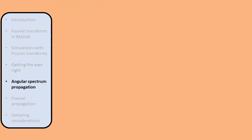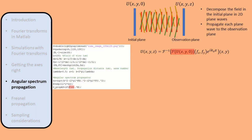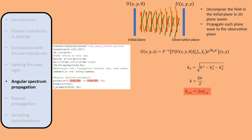Now that we know what the axes are when taking a Fourier transform in MATLAB, we can implement angular spectrum propagation and Fresnel propagation. For angular spectrum propagation, we multiply the Fourier transform of the initial field with the phase factor e^(i·k_z·z), where k_z is a function of the spatial frequencies. We express k_z in terms of k, k_x, and k_y, and k_x and k_y are related to the spatial frequencies f_x and f_y by a factor of 2π.